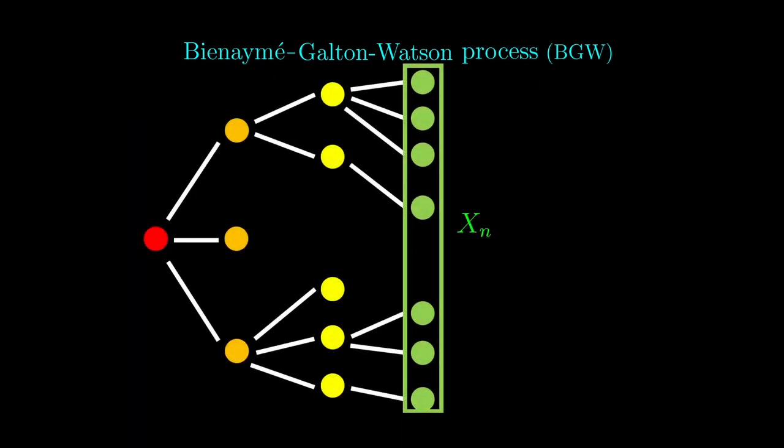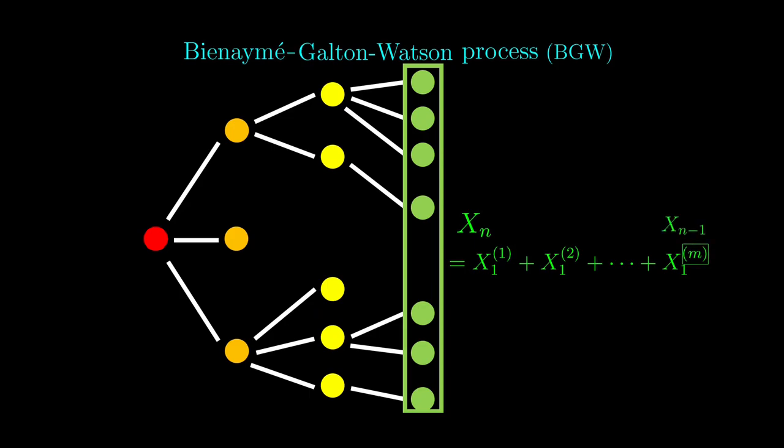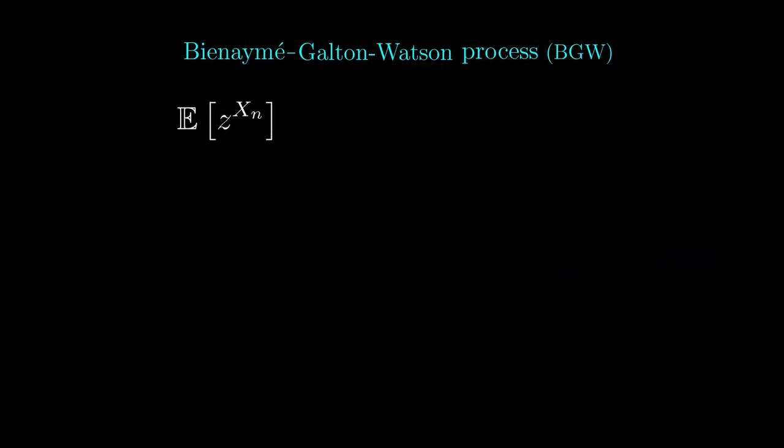In this BGW process, we have xn to be the number of individuals in the nth generation. Because the entire generation comes from the branchings of the previous generation, xn is the sum of the different copies of x1, because each branching is just a copy of x1. The number of copies is xn-1, the number of people in the previous generation. So the generating function for xn written in terms of the weighted average can be written in terms of this by rewriting xn as the sum of copies of x1.